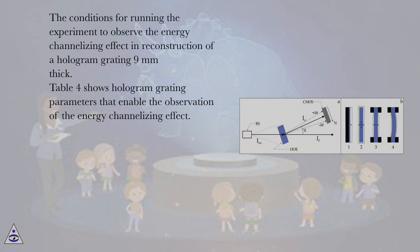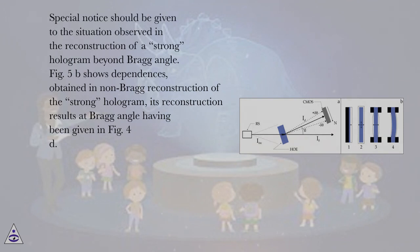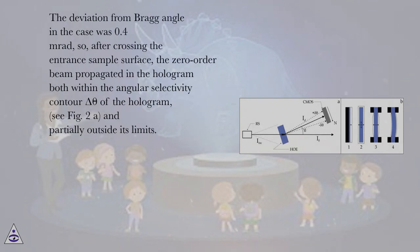The conditions for running the experiment to observe the energy channelizing effect in reconstruction of a hologram grating 9 mm thick are given in Table 4, which shows hologram grating parameters enabling the observation of the energy channelizing effect. Special notice should be given to the situation observed in the reconstruction of a strong hologram beyond Bragg angle. Figure 5b shows dependencies obtained in non-Bragg reconstruction of the strong hologram, whose Bragg reconstruction results were given in figure 4d. The deviation from Bragg angle in this case was 0.4 mrad.